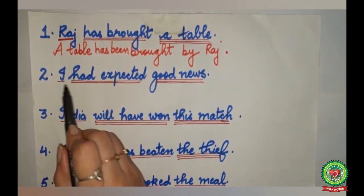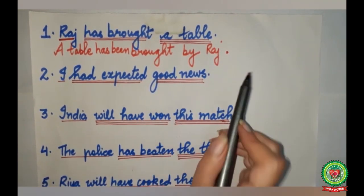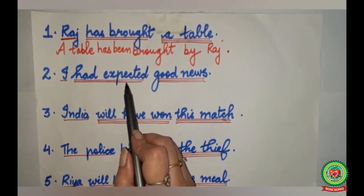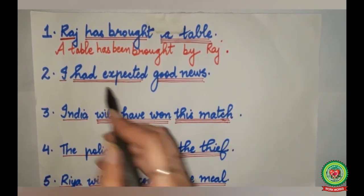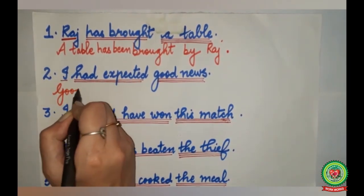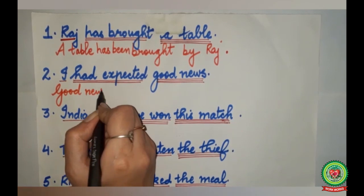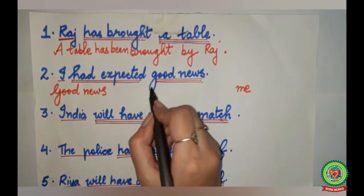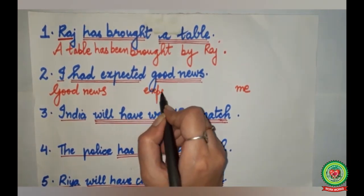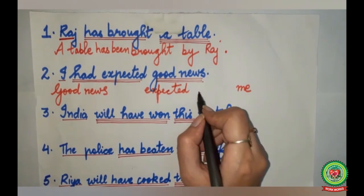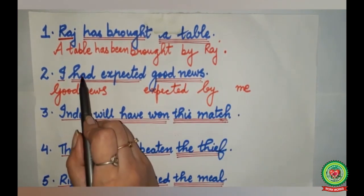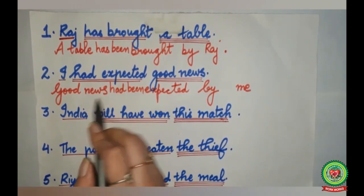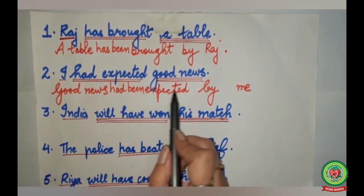Second sentence: I had expected good news. I is the subject, had expected is the verb, good news is the object. Good news will come in the beginning, I will go to the last and become me. Expected will remain expected. Before me we add by. Had changes to had been. The sentence becomes: Good news had been expected by me.